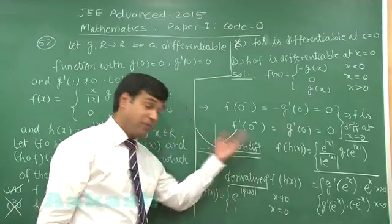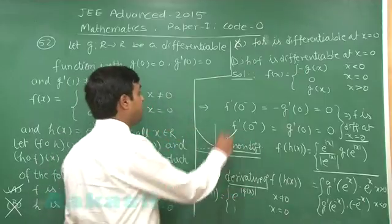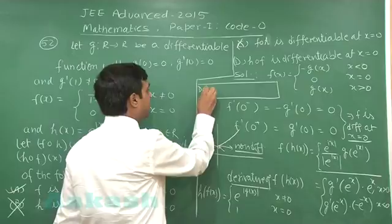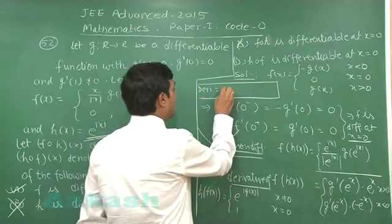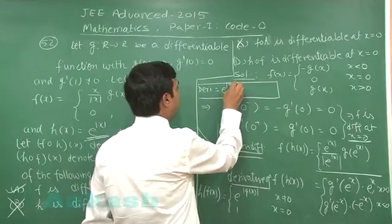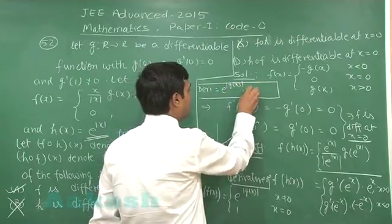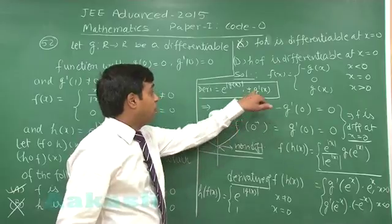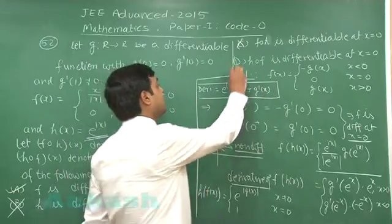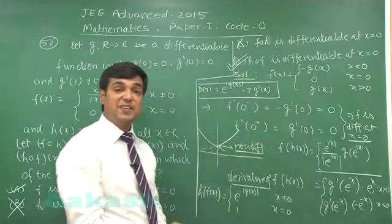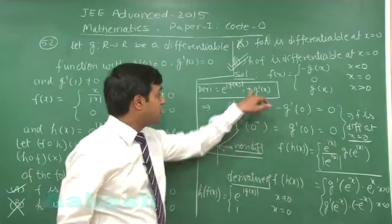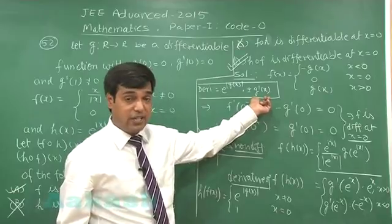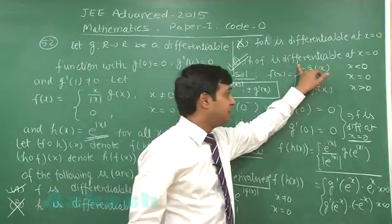When we take the derivative from left and right, the derivative of e^|g(x)| comes out as e^|g(x)| · (±g'(x)). When x = 0 we find g'(0), which equals 0 as given. So approaching from either left or right gives 0, and therefore h(f(x)) is differentiable at x = 0. Option D is correct.